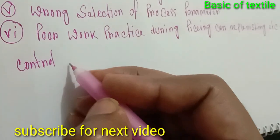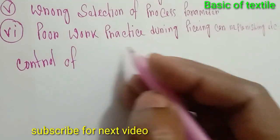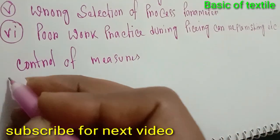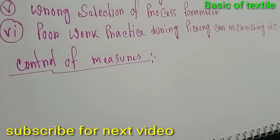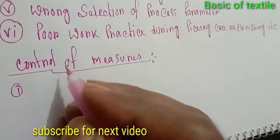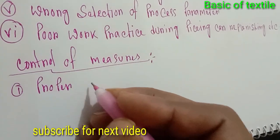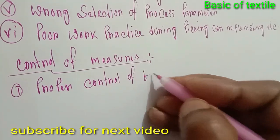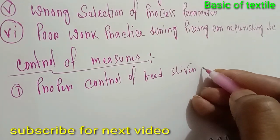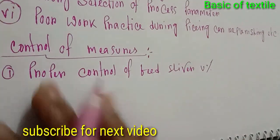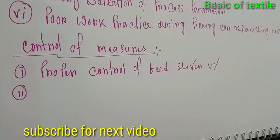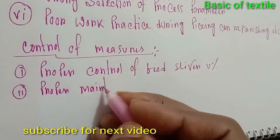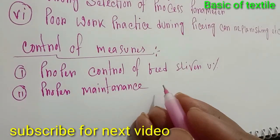Control measures: Number 1 — proper control of feed sliver U%. Number 2 — proper maintenance of machinery.